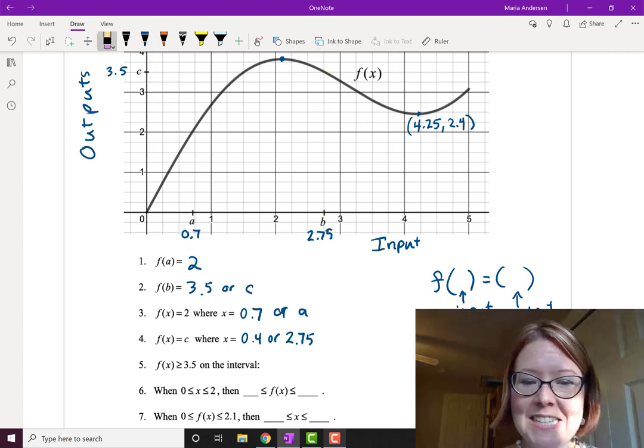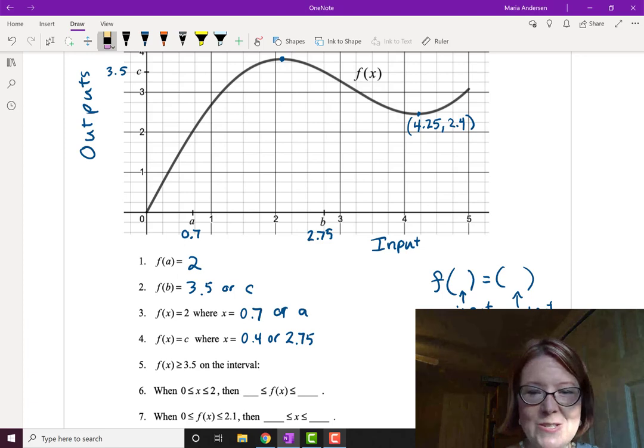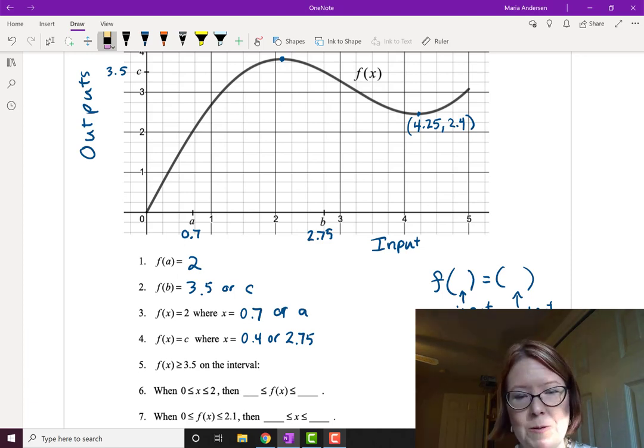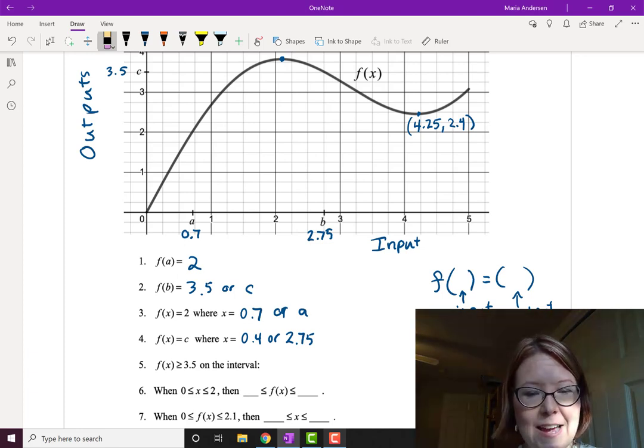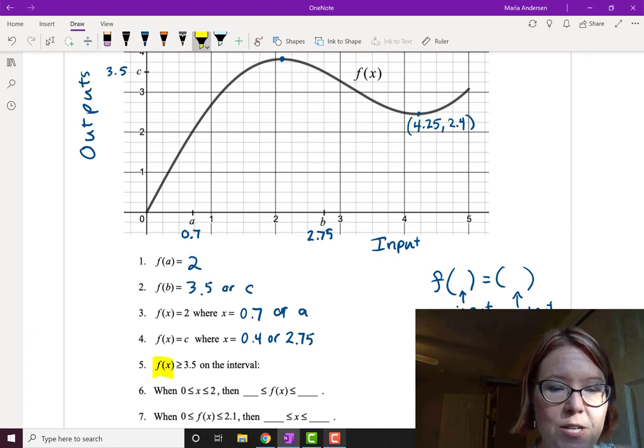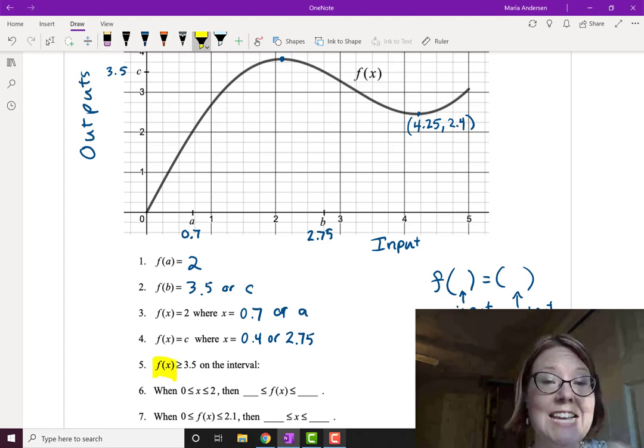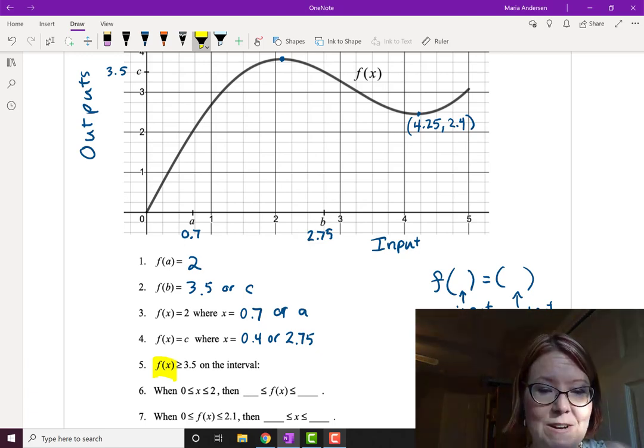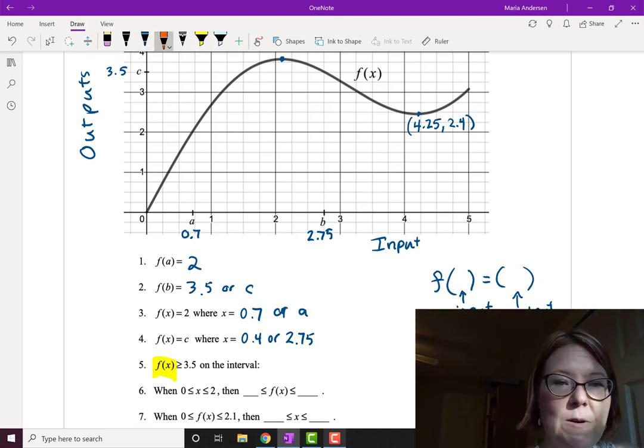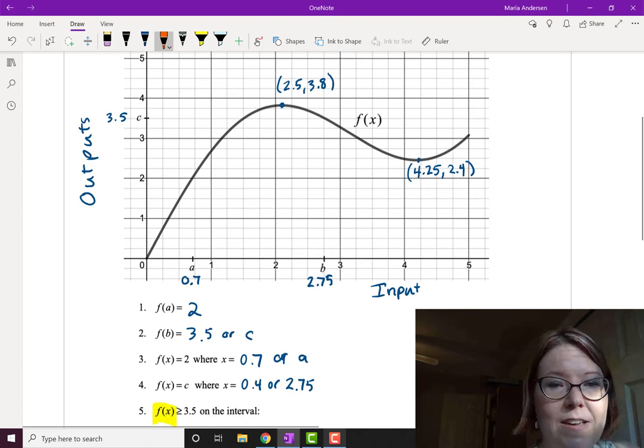Next, we're going to practice a little bit with inequalities. So f of x is greater than or equal to 3.5 on the interval what? So we're looking at the output. When is the output greater than or equal to 3.5? How do I know what's the output? Because it's the entire expression f of x. It's not x is greater than 3.5. It's f of x is greater than or equal to 3.5. I'm going to start at 3.5 on the graph and draw a line going across. That's the line at c.